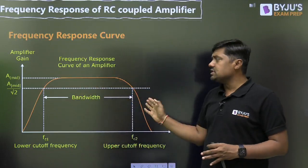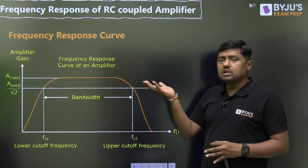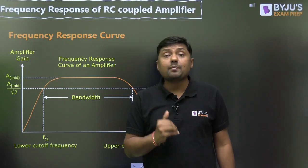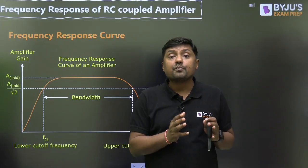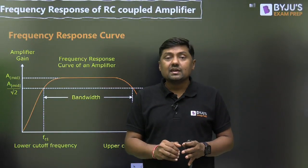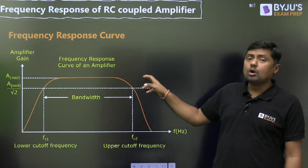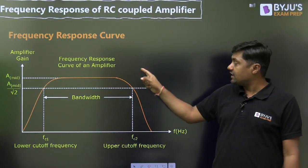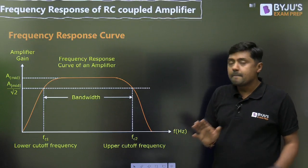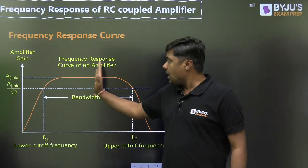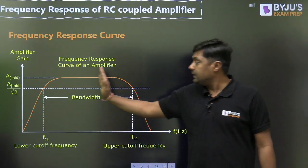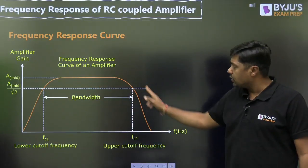At the high frequency side, when we are increasing the frequency, the impedance will decrease and the internal capacitors will try to act as short circuit. Because of that, gain will reduce. Ideally they should act as open circuit, but they act as short circuit — that is why gain will reduce at high frequency. In the lower half portion it looks like a high pass filter; at the high frequency side it looks like a low pass filter.